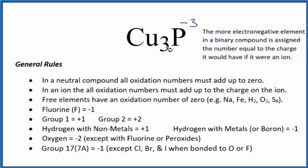So in order for this to all equal zero, 3 times plus 1, that would give us 3, so 3 plus minus 3, that adds up to zero. So the oxidation number on each copper atom here in Cu3P is a positive 1.